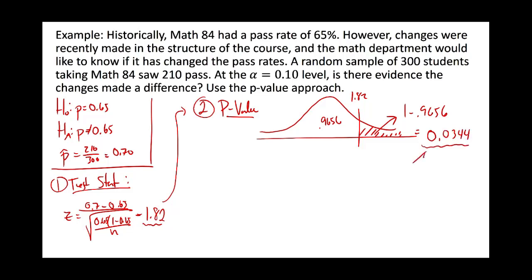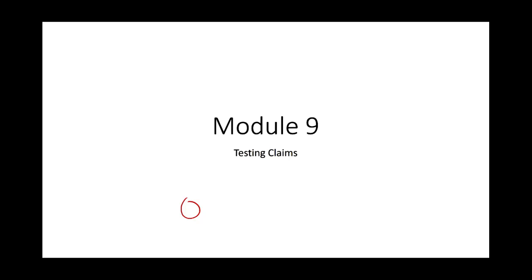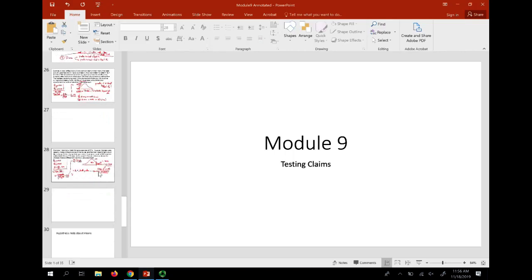0.0344 would be the p-value if this were a one-sided test. But since the alternative is not-equal-to, we need to double our p-value to account for both directions. So our actual p-value becomes 2 × 0.0344 = 0.0688.